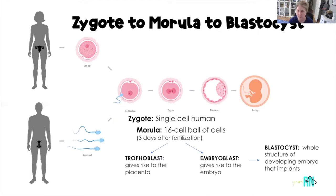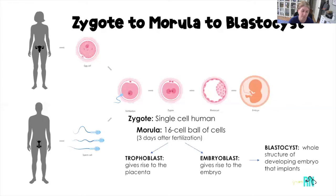The morula actually has two parts — it separates into the trophoblast and the embryoblast. The trophoblast is what gives rise to the placenta, and the embryoblast is what gives rise to the embryo. From the embryoblast is where we get the blastocyst. So: egg and sperm meet, we have a fertilized egg which becomes a zygote. After 16-cell divisions, that 16-celled organism is the morula — about three days after fertilization. The morula gives rise to the trophoblast, which becomes the placenta, and the embryoblast, which becomes the embryo. The blastocyst is the ball of cells that actually implants into the uterus.